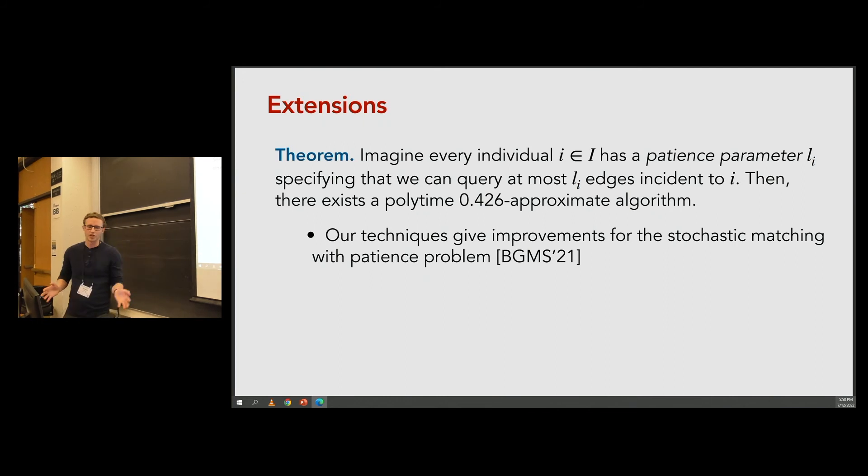I'll briefly mention one extension. If every individual has some patience parameter L_i specifying that we can query at most L_i edges incident to it, we also give a polynomial time approximation algorithm. It's maybe relevant because in some gig economy settings, we might not want to overload workers with offers. We show that the techniques used for this also give improvements for the stochastic matching with patience problem.